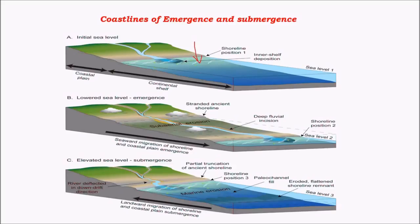If the sea level goes above, some part of the land is submerged, giving rise to a coastline of submergence. When the sea level falls and recedes backward, the coastline that was previously covered by sea appears — this is called a coastline of emergence. These coastlines are formed mainly due to subsidence in sea level or the upliftment or subsidence of landforms.